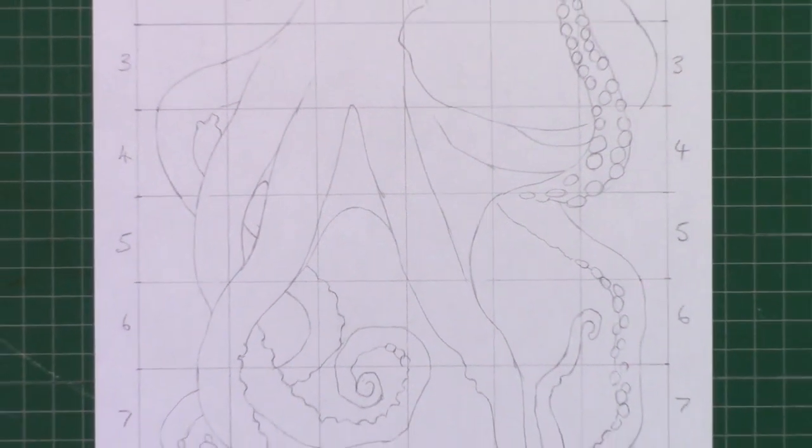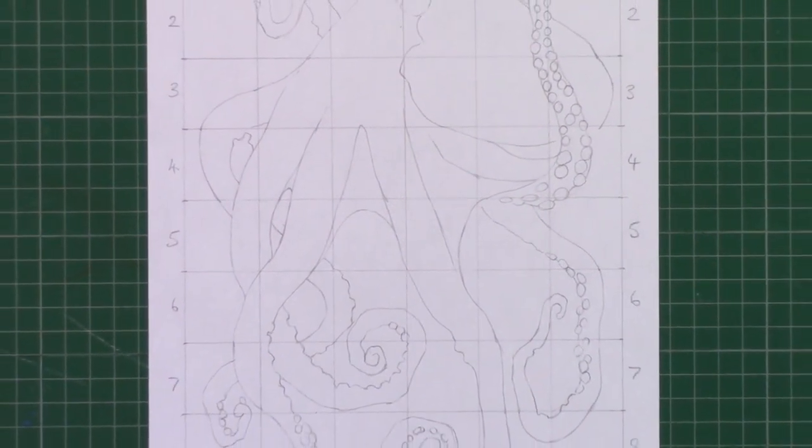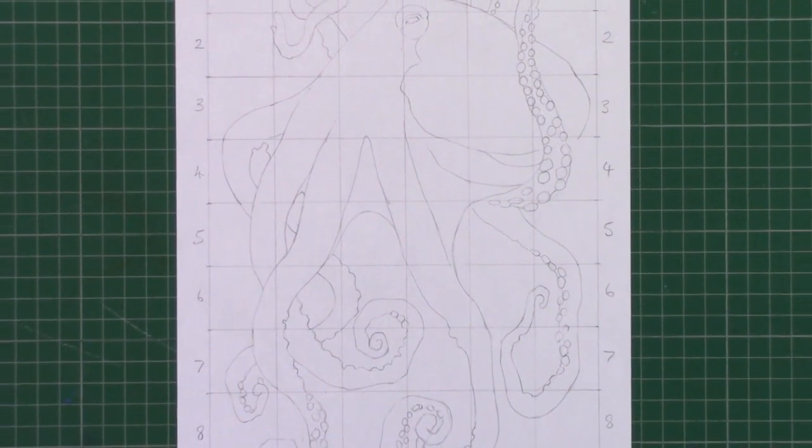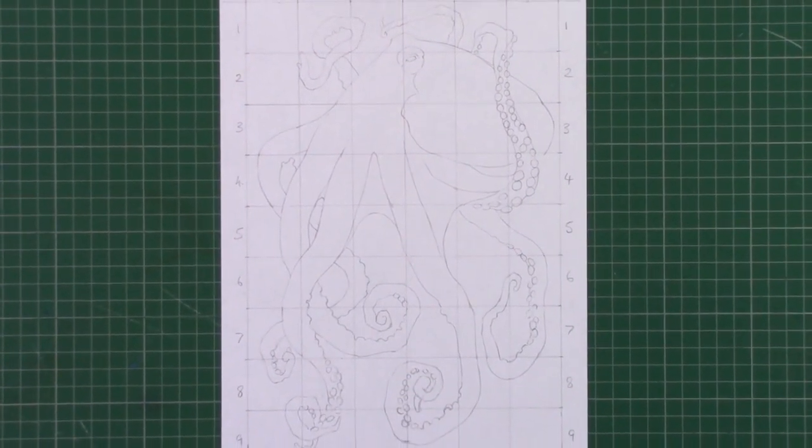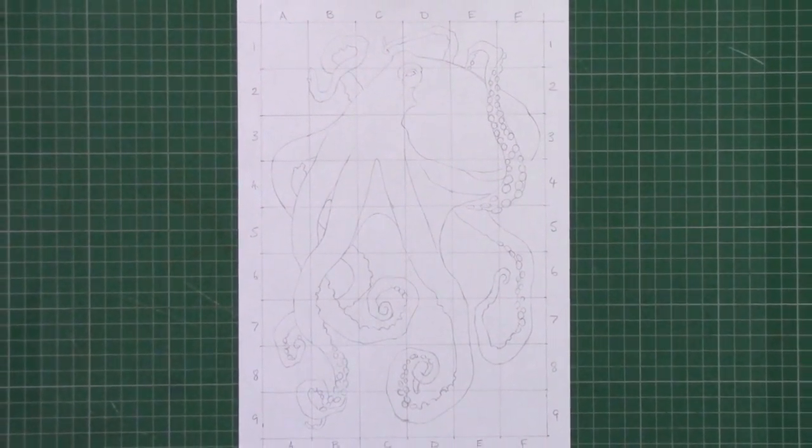When you reach the final square, you should find that you've got an exact copy of the drawing of the octopus. If you find the drawing a little bit too difficult, then just use the printout of the outline and color that in instead.